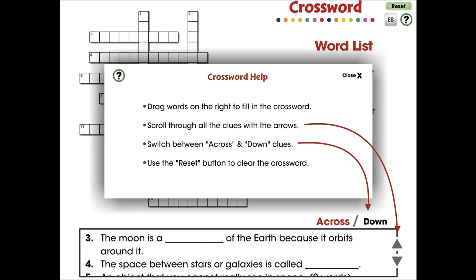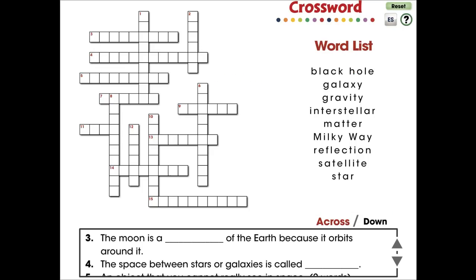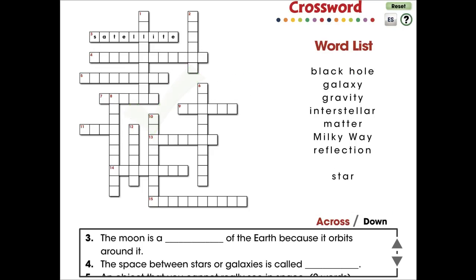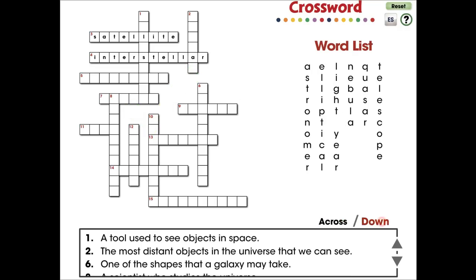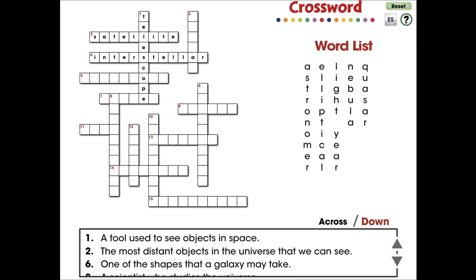In this crossword activity, 15 vocabulary words are provided with across and down clues. For middle school, this mini is great for vocabulary and comprehending all the words centered around the topic of galaxies in the universe.